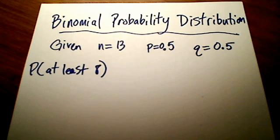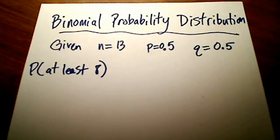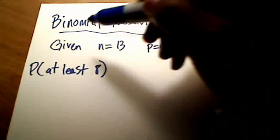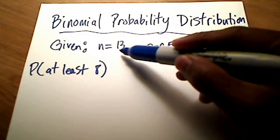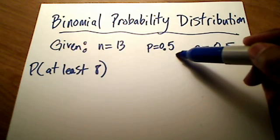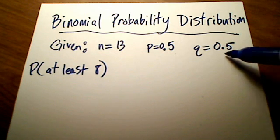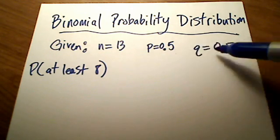OK, this video is a part 2 continuation of explanation regarding binomial probability distribution. So let's continue. Let's say that we were given this information here. We were given that the number of trials was 13. Our probability of success is 0.5, which automatically means our probability of failure is also 0.5, because these two have to be complements of each other.